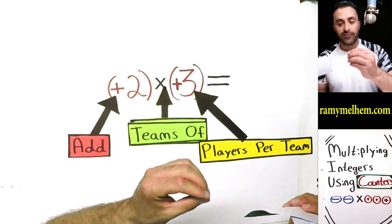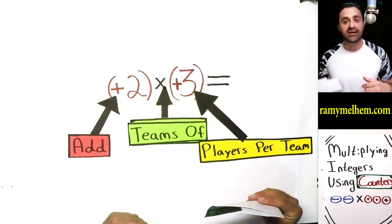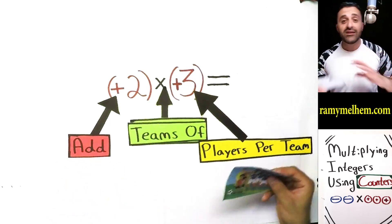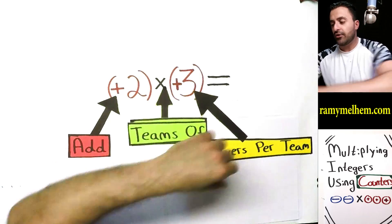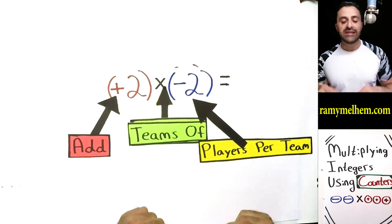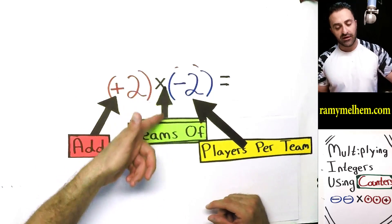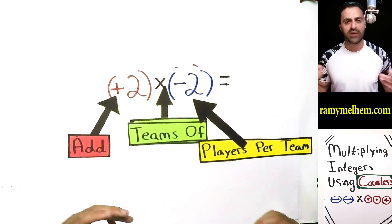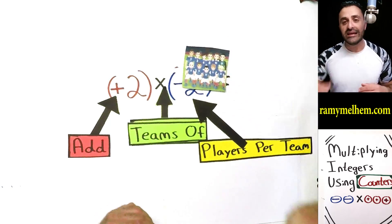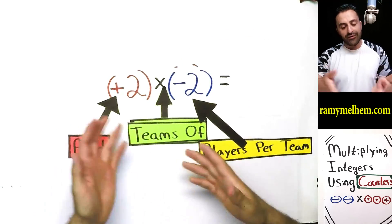It sounds like we're over-complicating this because we all know two times three is six, but I do need to teach you how to think through these because the problems get a little bit trickier. If I make this negative two, let's read this together — it still says: add two teams of negative two, two blue players per team. So I need to add two teams of these blue guys. That's how you read this first part.